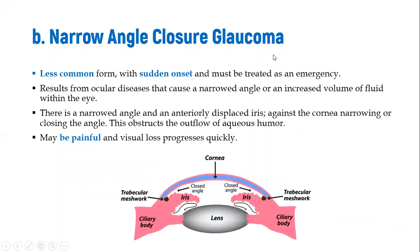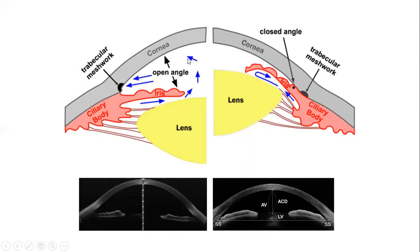The second primary type is narrow angle closure glaucoma. Here, the angle between the cornea and the iris is highly reduced, so while the trabecular meshwork drainage may be functional, the space where the fluid is supposed to flow is very small, impeding flow. This type is less common, has a sudden onset, and is normally painful. It is treated as a medical emergency due to a very rapid rise in intraocular pressure. The key issue is the reduced iridocorneal angle obstructing outflow of aqueous humor.